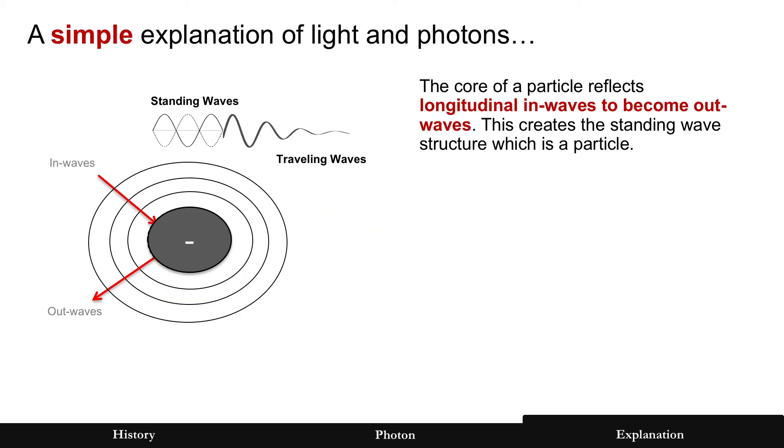Let's put this together for a really simple explanation of light and photons. For this first part, you have to go back to some of the other videos in energy wave theory. Particles are reflecting—the core of a particle is reflecting longitudinal waves. An in wave becomes an out wave, and that creates the standing wave structure of the particle.